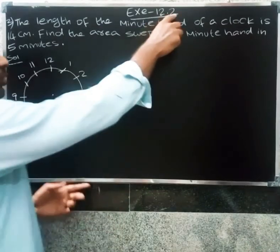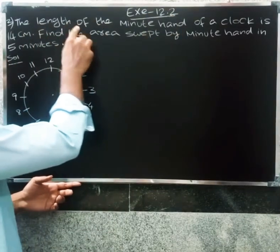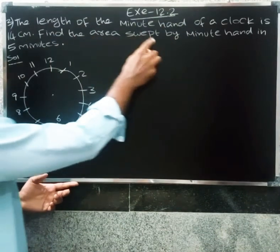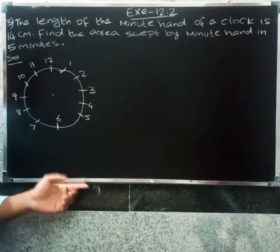Welcome friends. You have Exercise 12.2, third question. The length of the minute hand of a clock is 14 centimeters. Find the area swept by the minute hand in 5 minutes.